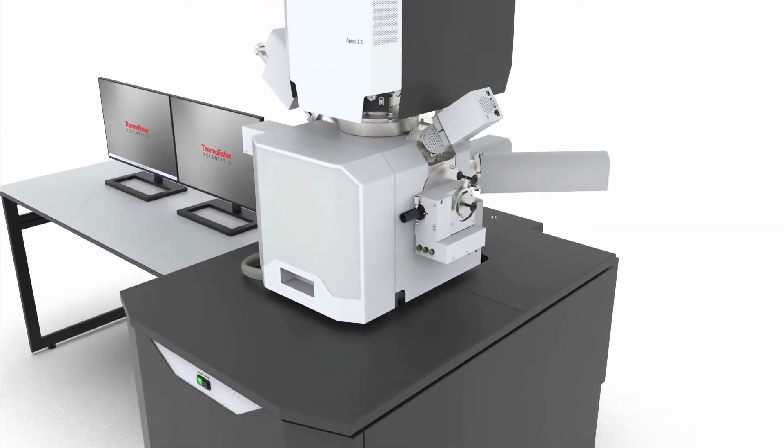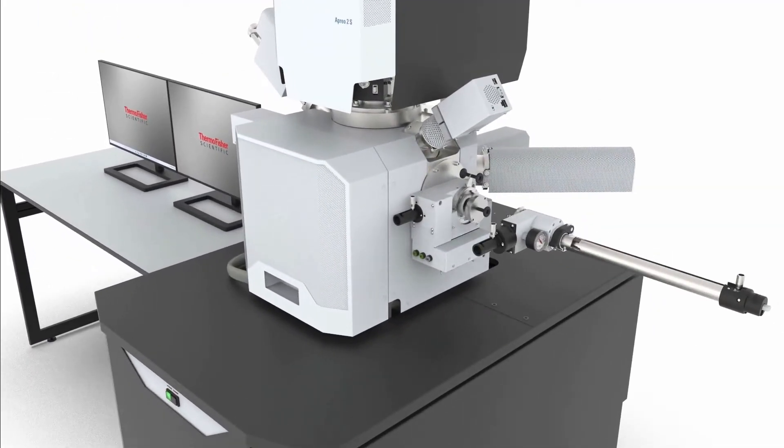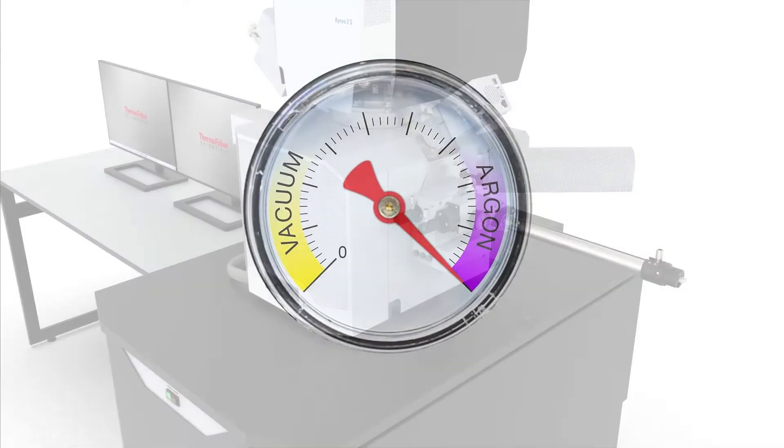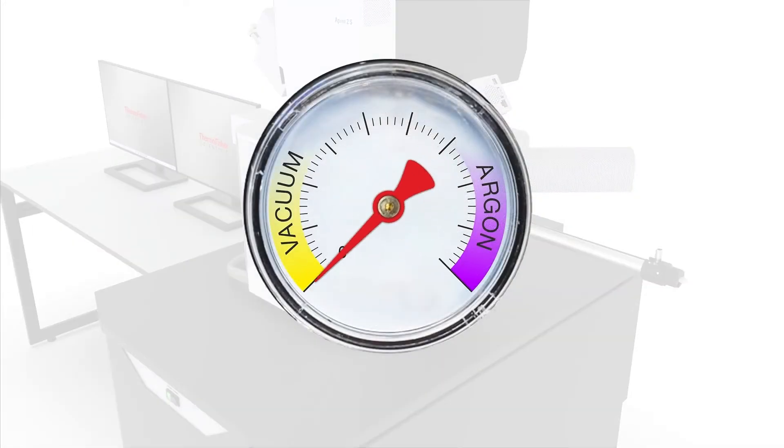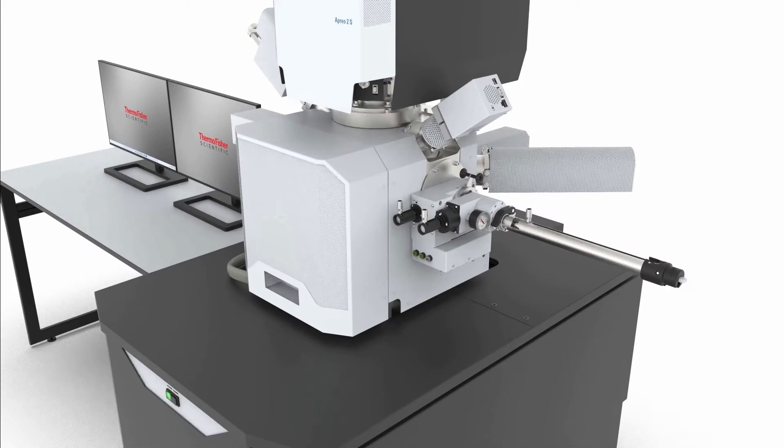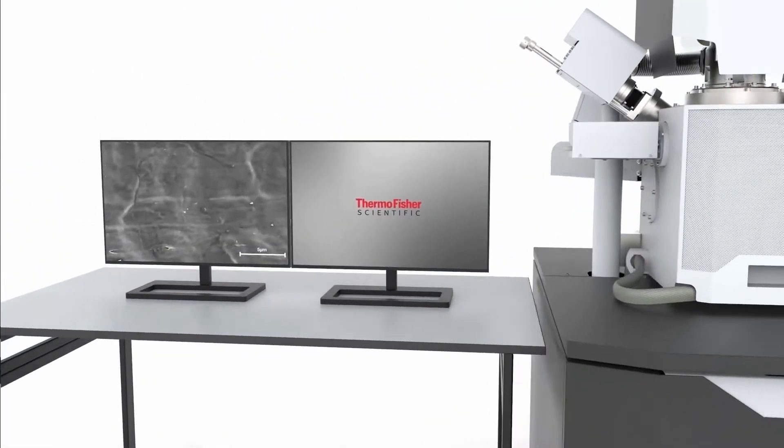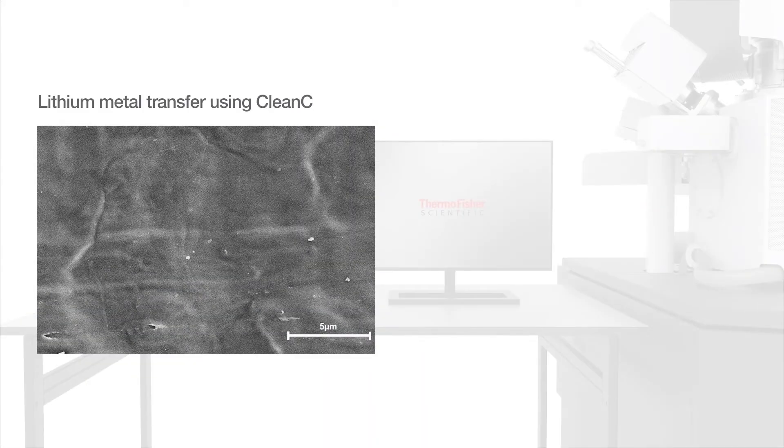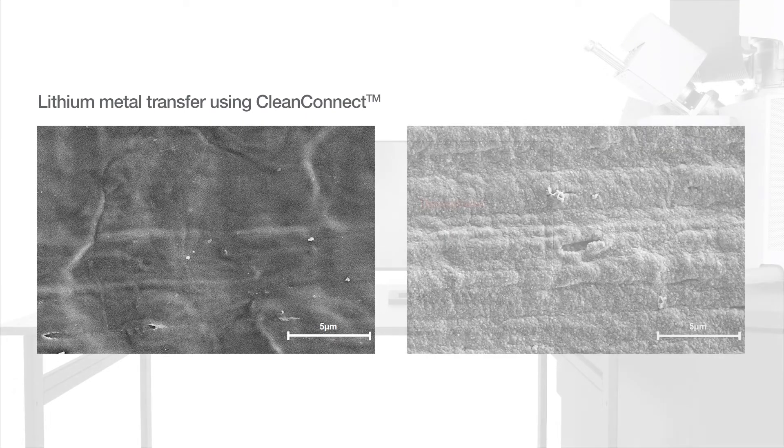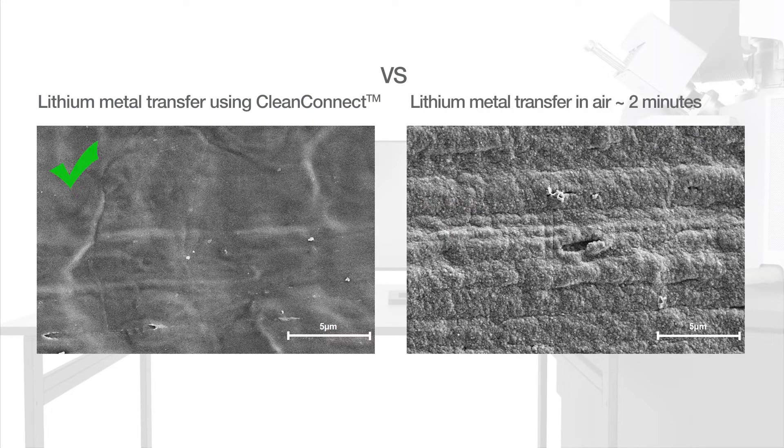CleanConnect is well integrated with a variety of scanning electron microscopes. Automation of initial flushing cycle and stage alignment allows faster time to the result. As shown, the pristine lithium metal surface allows an in-depth analysis of the surface features. Without CleanConnect, this would not be possible as the sample surface would be completely modified.